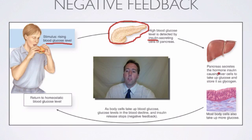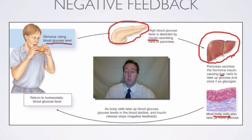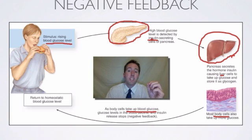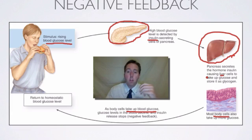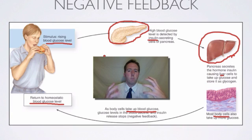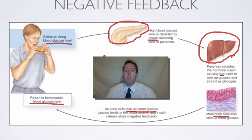Insulin then travels over to the liver — this is the liver over here. Insulin travels to the liver and it also targets a whole lot of body cells. The liver, as well as body cells, then take up glucose from the blood. So if glucose is too high in the blood, the pancreas secretes insulin into the bloodstream, and the liver and all the body cells remove the extra glucose from the blood until it returns to the right level — back to homeostatic levels. This is the endocrine system using the hormone insulin to decrease blood glucose levels.